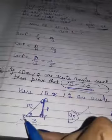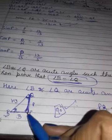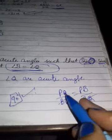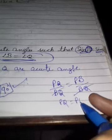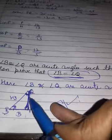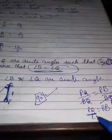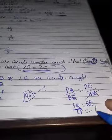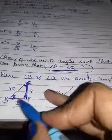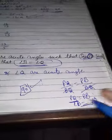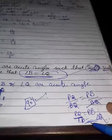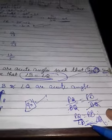Since sin B equals sin Q: with B as reference you take PQ/BQ, and with Q as reference you take PB/BQ. After observation, BQ cancels from both sides, giving PQ equals PB. The angle opposite to PQ is B, and the angle opposite to PB is Q. Since the sides are equal, the angles opposite to equal sides are also equal — so angle B equals angle Q. Hence proved.